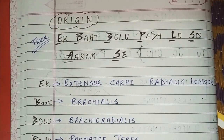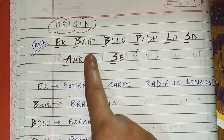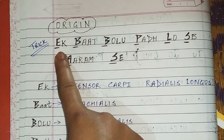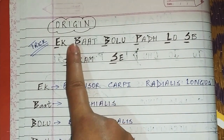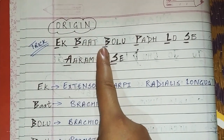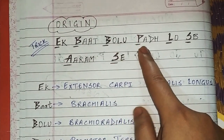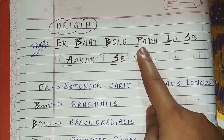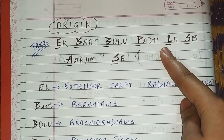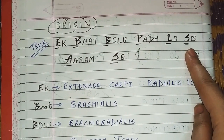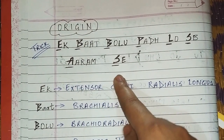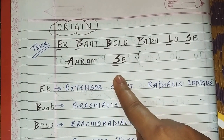Very easy! Let's repeat the origin one more time. Ek baat bolu, padh lo, sub aaram se: E — Extensor Carpi Radialis Longus. B — Brachialis. B — Brachioradialis. P — Pronator Teres. L — Lateral head of Triceps Brachii. S — Superficial Flexor muscle. A — Anconeus muscle. S — Superficial Extensor muscle.